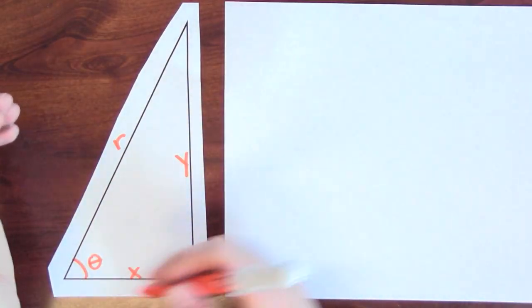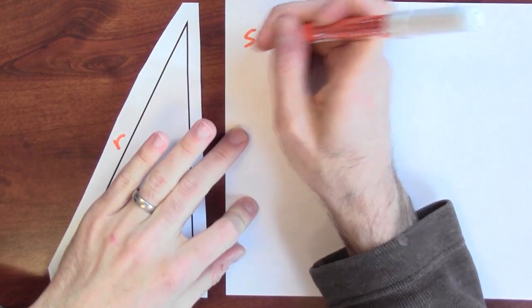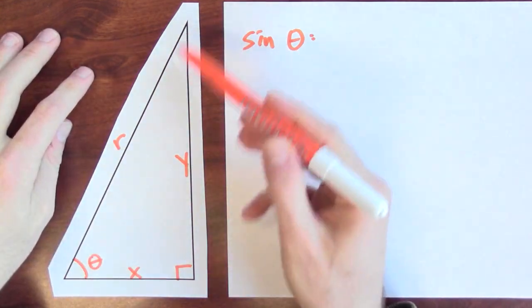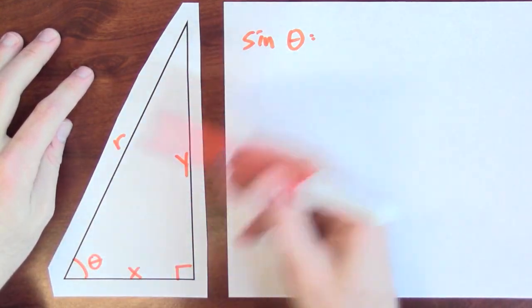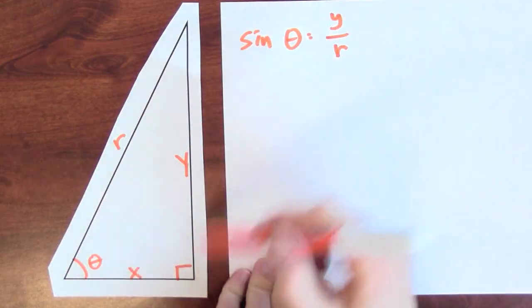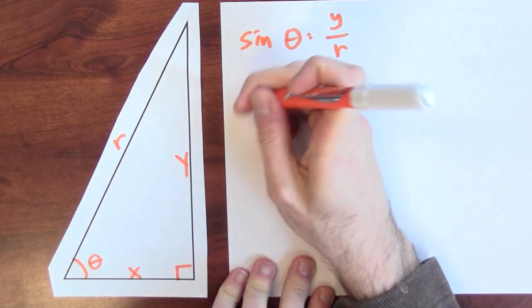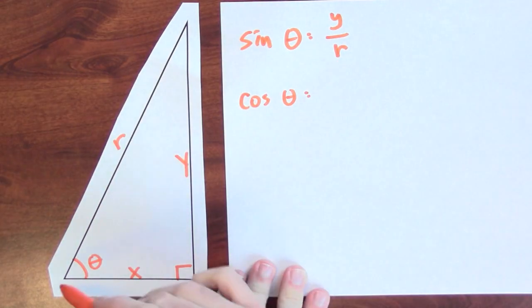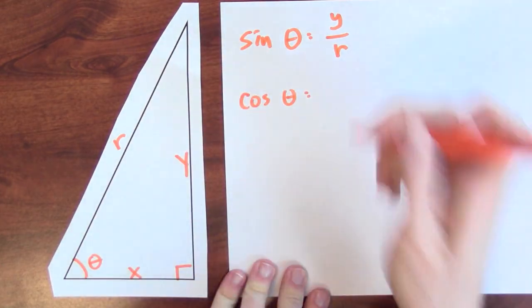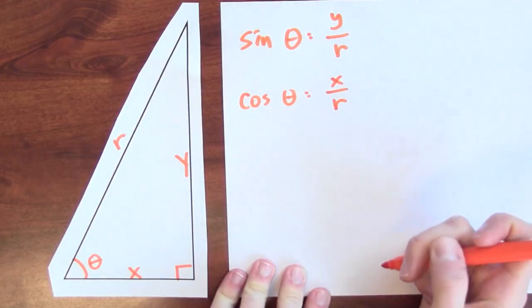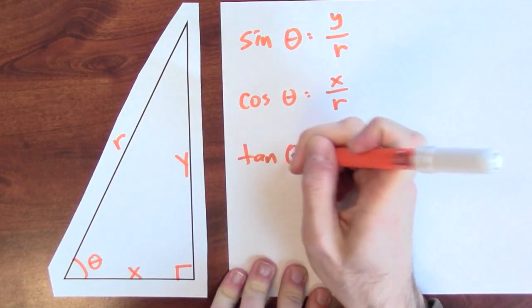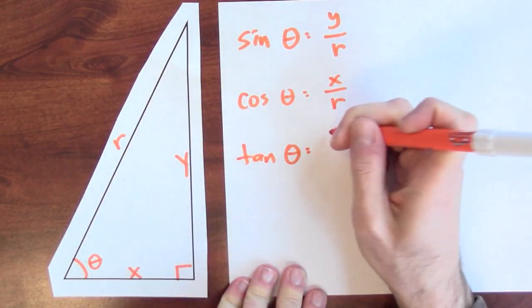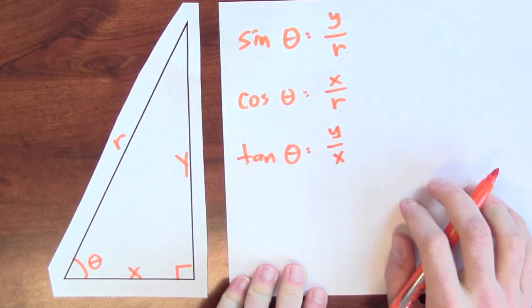So we can give names to these ratios. The sine of theta is the ratio between the height and the hypotenuse, the opposite side over the hypotenuse. It's y over r in this diagram. The cosine of theta is the ratio between the adjacent side and the hypotenuse of the right triangle. It's x over r in this picture. And the tangent of theta, that's the opposite side over the adjacent side. It's y over x in this picture.